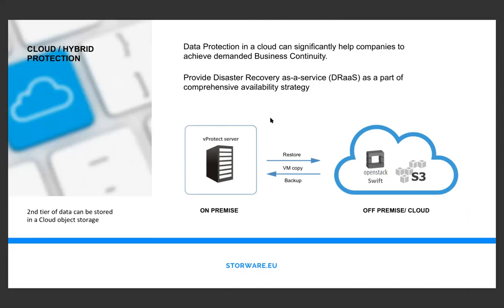For S3 and Swift: most queries we receive from customers are S3-related. It's not always Amazon — sometimes it's storage that exposes S3 endpoints. We can back up to either local S3-based backup providers or directly to the cloud. One of our implementations keeps the last backup locally on drives while pushing backups generally to S3, using cloud as storage with vProtect as a standalone solution protecting Citrix servers.